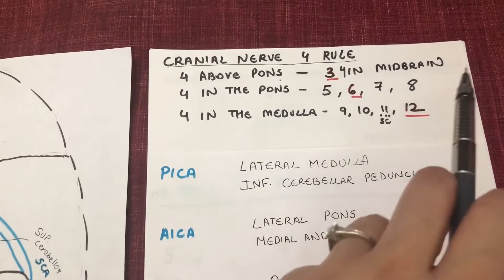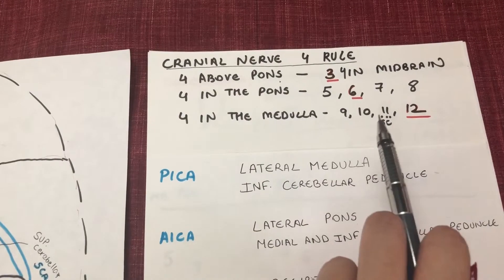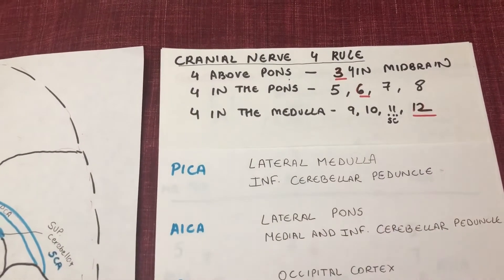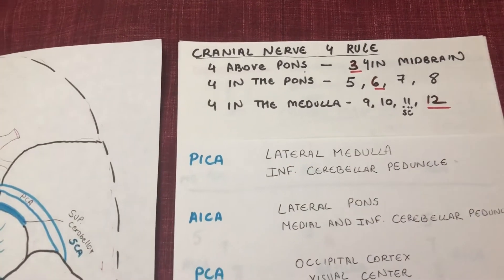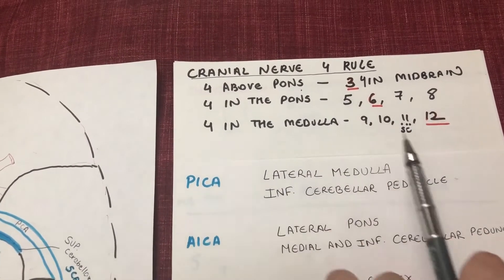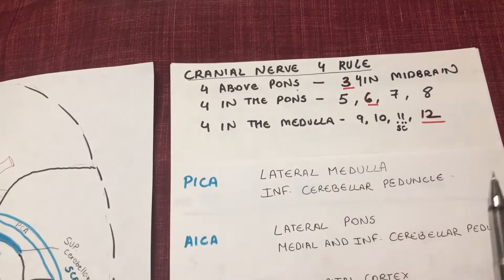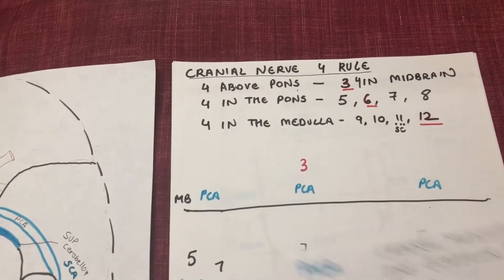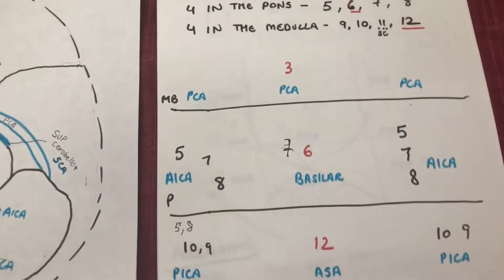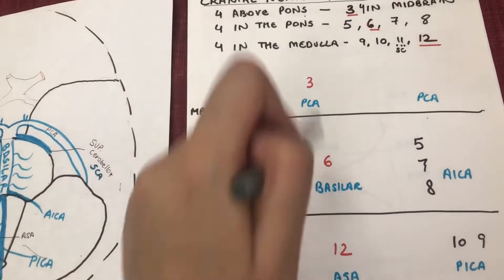So cranial nerves 3 and 4 are in the midbrain; 5, 6, 7, 8 are in the pons; and 9, 10, 12 are in the medulla. CN 11 is in the spinal cord, so we'll ignore that. Now 3, 6, and 12 are multiples of each other — 3×2=6, 6×2=12 — so these go in the middle.